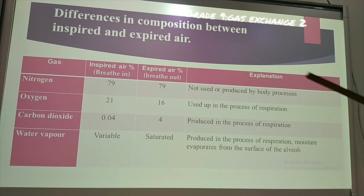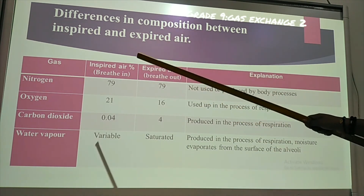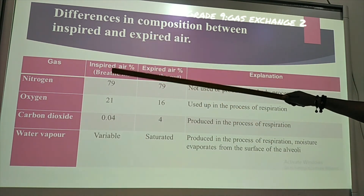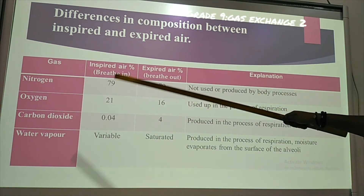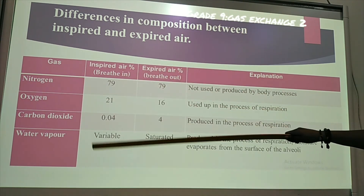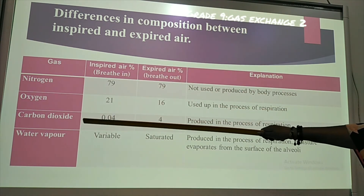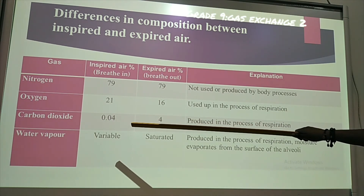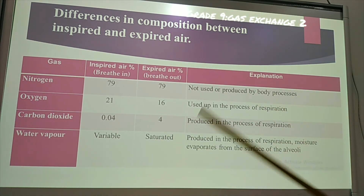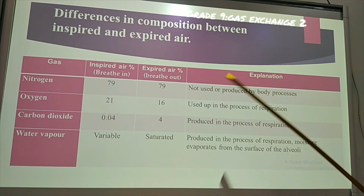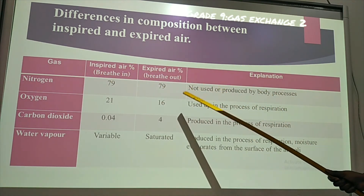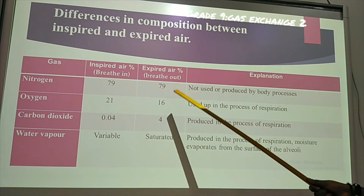Let's review: how many percent of nitrogen is in the air we're breathing in? 79%. Percentage of oxygen? 21%. Percentage of CO₂? 0.04%. And in the expired or exhaled air we have 79% nitrogen, 16% oxygen, and 4% carbon dioxide.